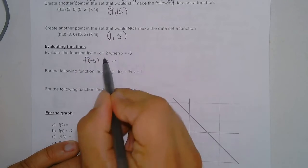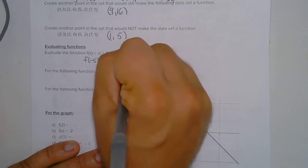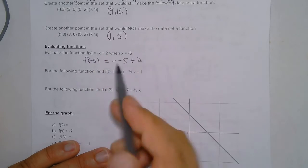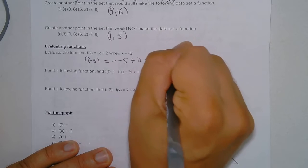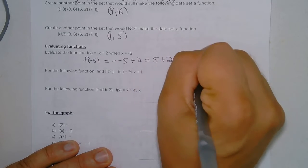So that would equal negative of, and I plug in negative 5 plus 2. When I have two negatives that makes a positive. So that becomes 5 plus 2, which is 7.